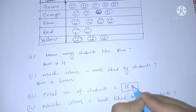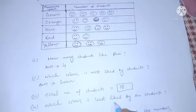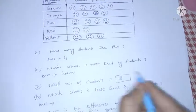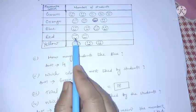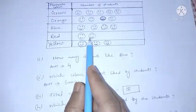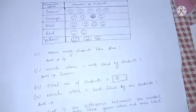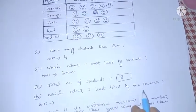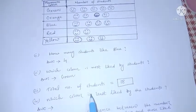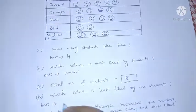Total number of students is 18. Which color is least liked by the students? See here — red color, only two students. The minimum number of students is two, so red color is least liked.